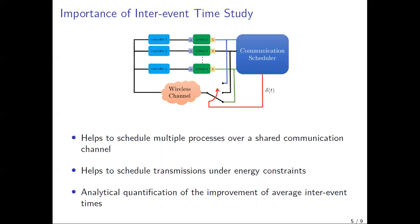Understanding the evolution of inter-event times helps to schedule multiple processes over a shared communication channel or to plan transmissions under constraints. Similarly, understanding inter-event times generated by an event-triggering rule can help in the analytical quantification of the improvement of average inter-event times for an event-triggered controller over that of a time-triggered controller. However, very little research has been done on this problem.